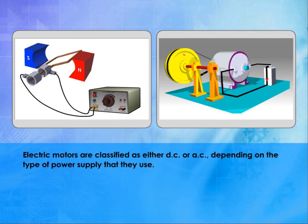Electric motors are classified as either DC or AC depending on the type of power supply that they use.